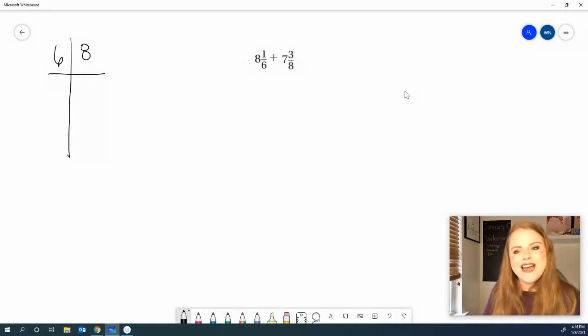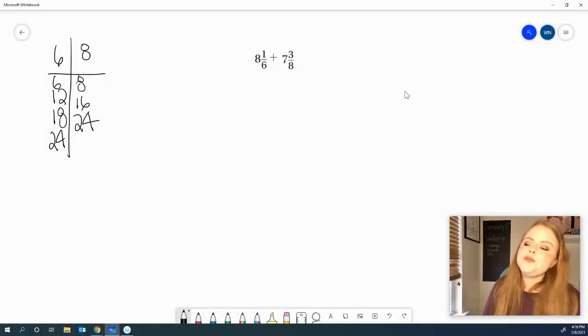All right. Now, let's jump back into it now that you've done the problem. And we'll list out our multiples. 6, 12, 6 times 3 is 18, 6 times 4 is 24. 8, 16, 24.